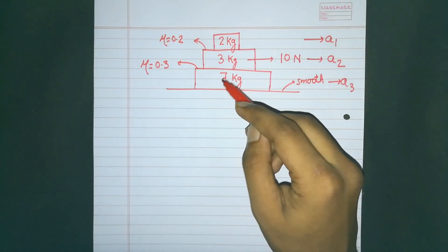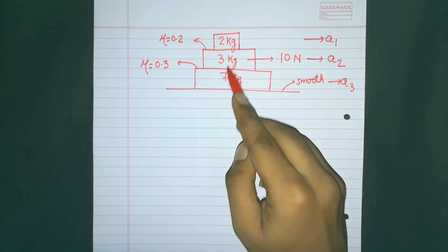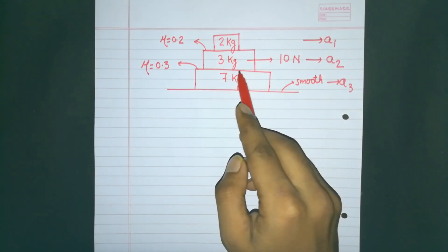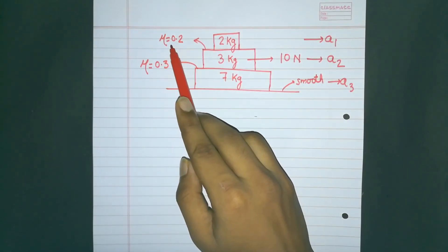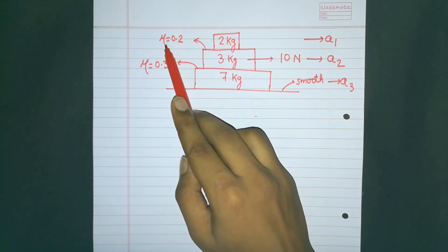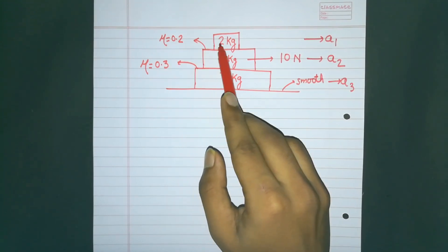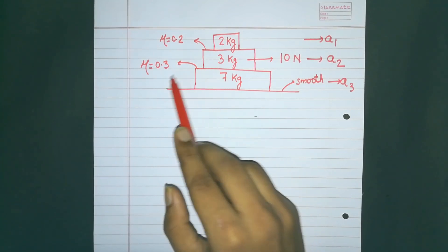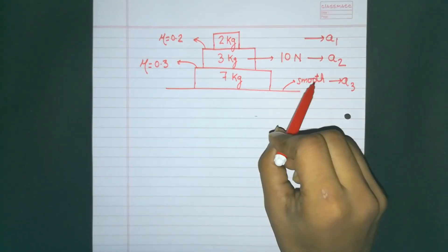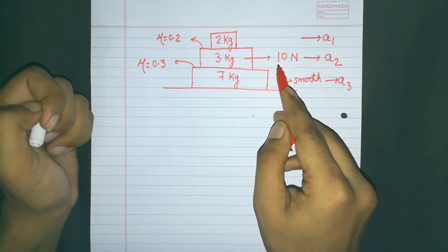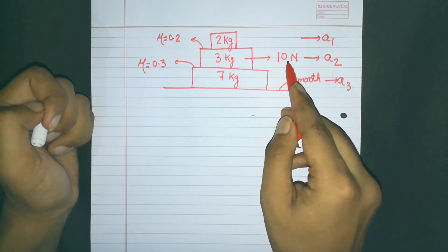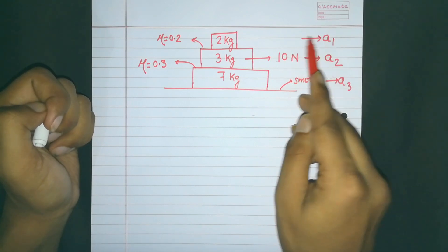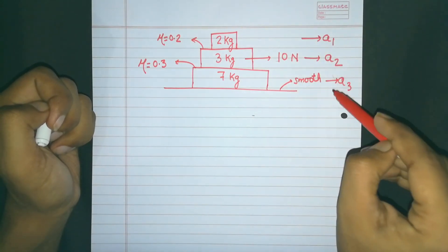We have here the masses 2kg, 3kg, and 7kg, and these are all flat surfaces. The given in the question is: the coefficient of friction between 2kg and 3kg is 0.2, between 3kg and 7kg is 0.3, and the ground is smooth. The external force acting is 10 newtons on the 3kg mass, and the accelerations for the masses have been named A1, A2, and A3 respectively.